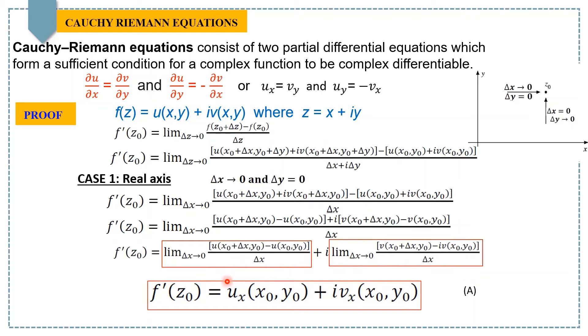But you see here, because only x is varying and all other variables are constant, hence we can say that this is the ordinary derivative of u with respect to x and this is the ordinary derivative of v with respect to x, which further can be written as f'(z₀) = uₓ(x₀,y₀) + ivₓ(x₀,y₀). Let's call this equation A.